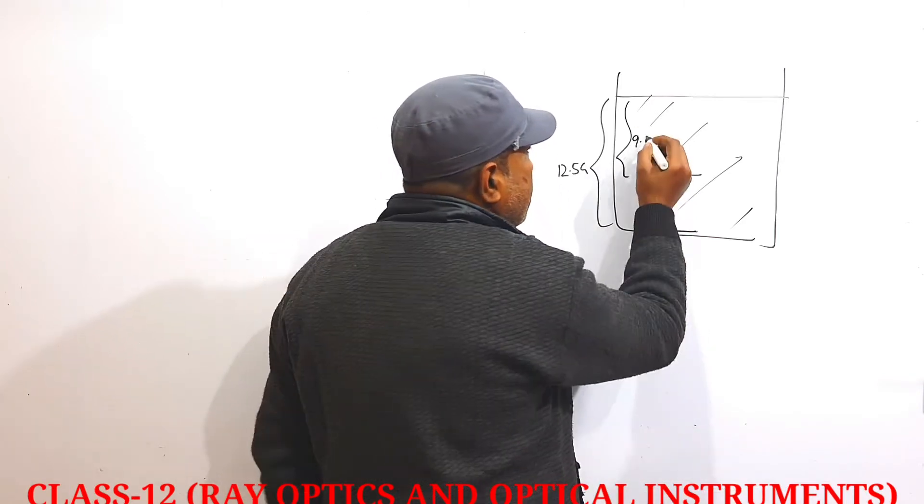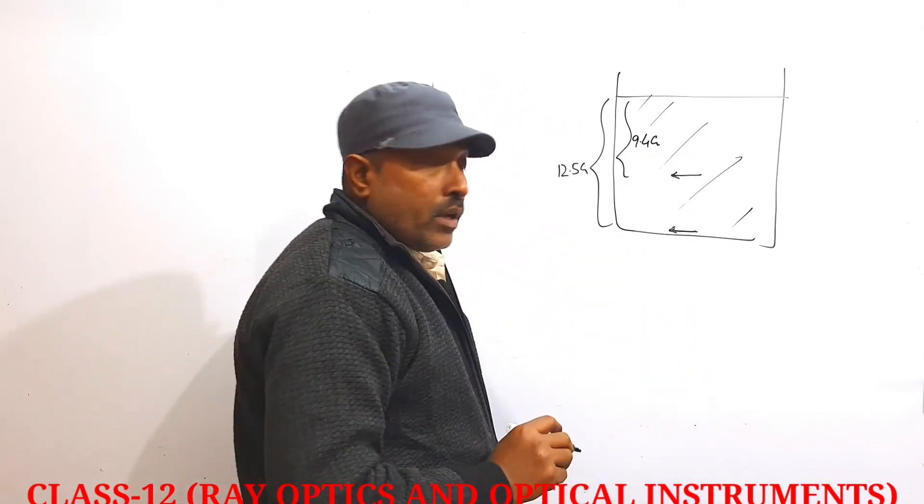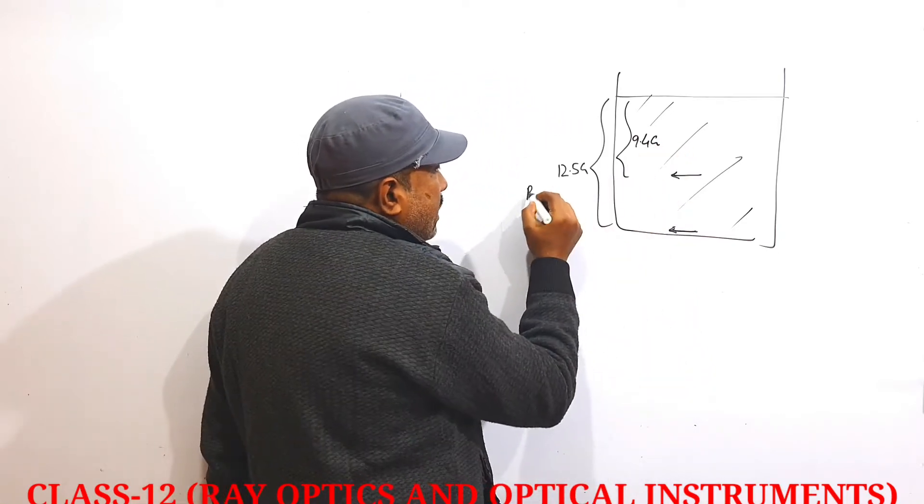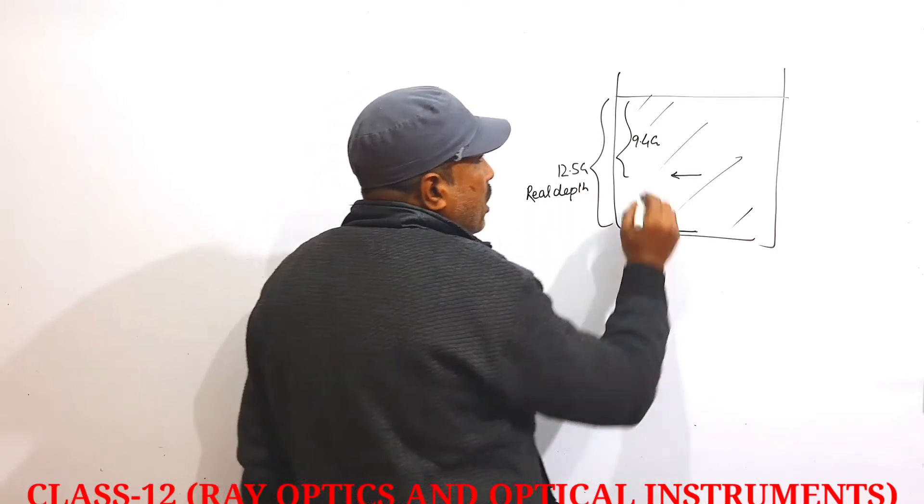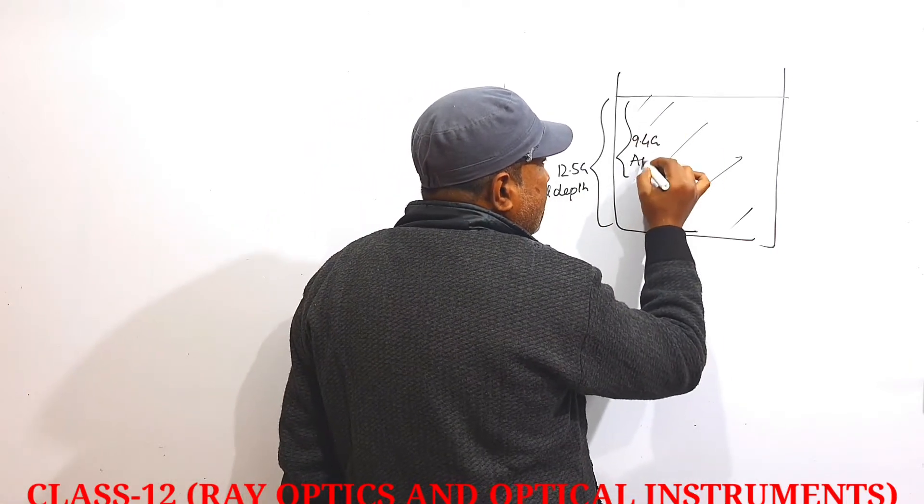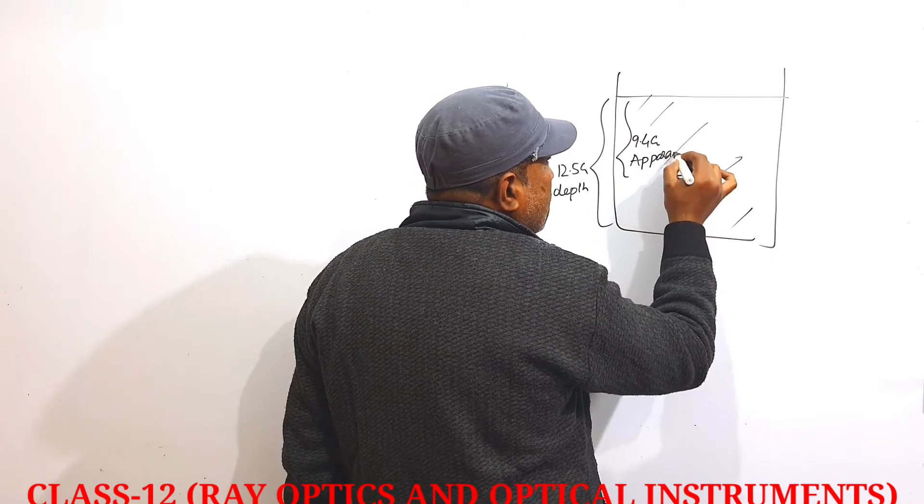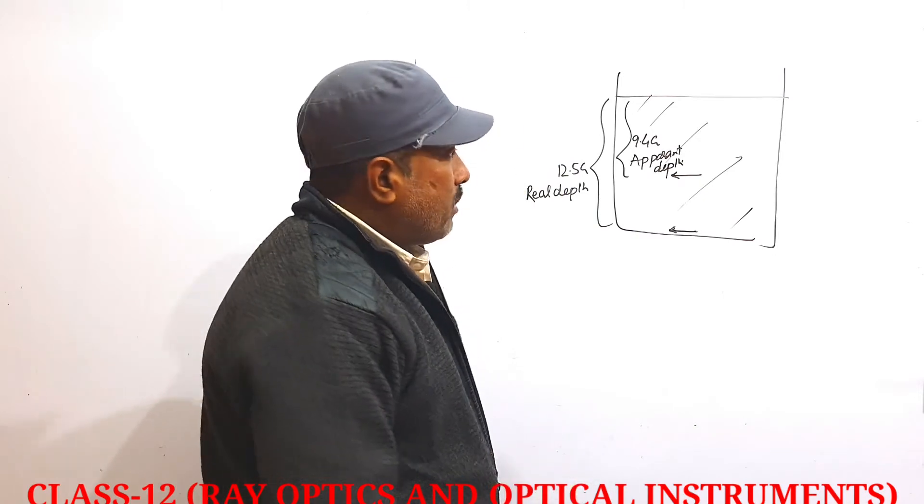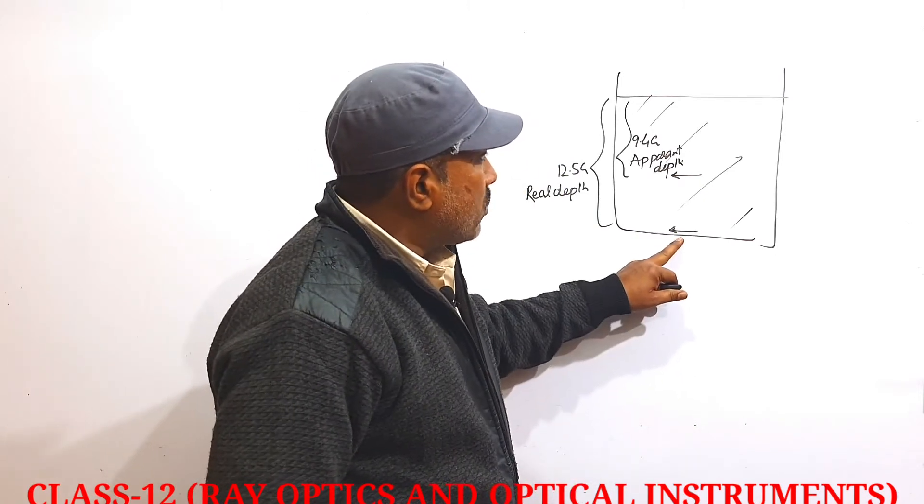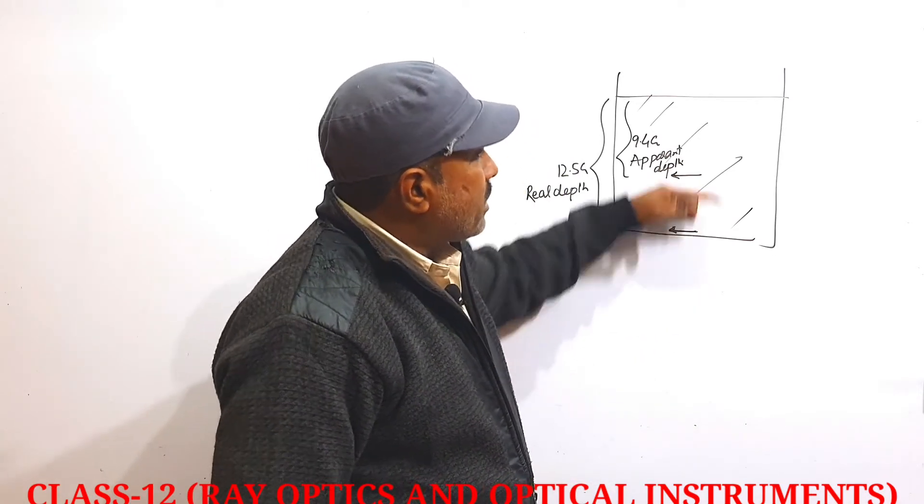Now see, this is the real depth. And this 9.4 centimeters is the apparent depth. When we see this object through the microscope, it appears as if it is somewhat higher.